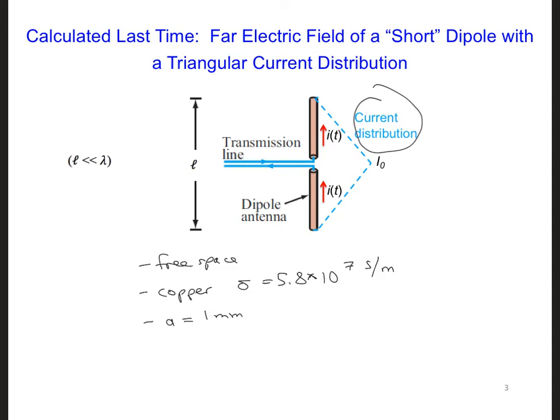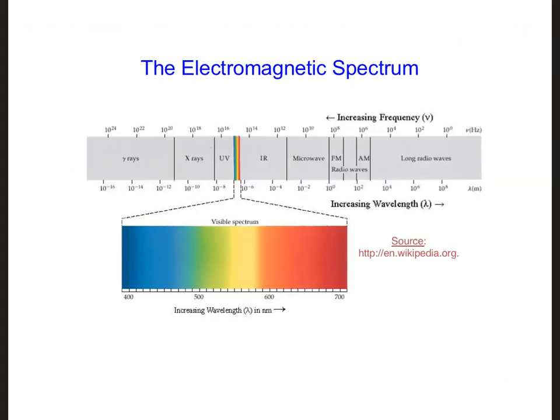Now, we also need to choose an operating frequency for our antenna. What should we choose? Well, microwave ovens operate at about 2.4 GHz. If we look at the electromagnetic spectrum, we can see that 2.4 GHz is right around here in the microwave range.